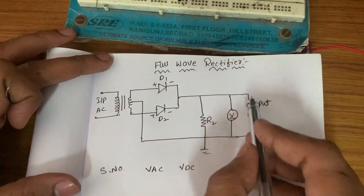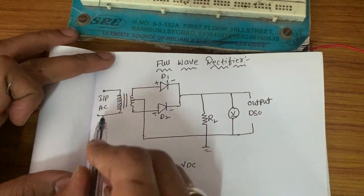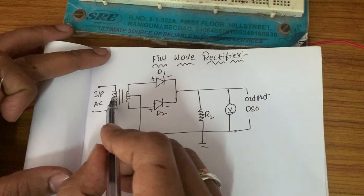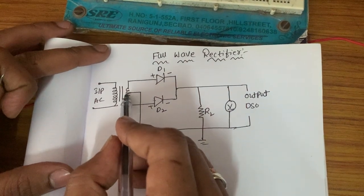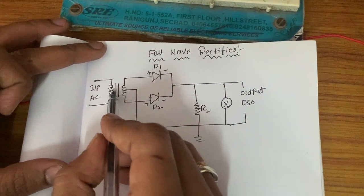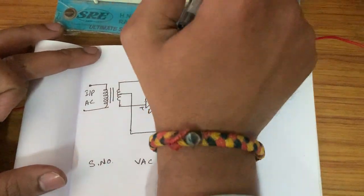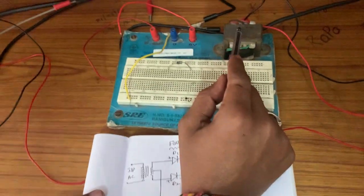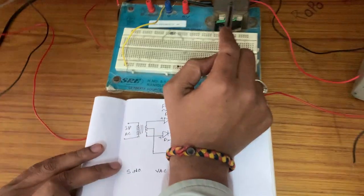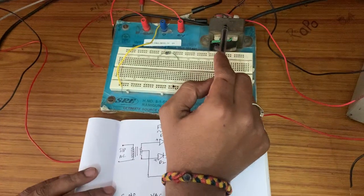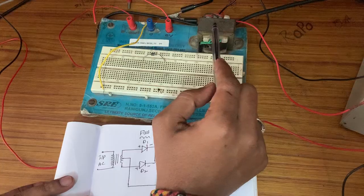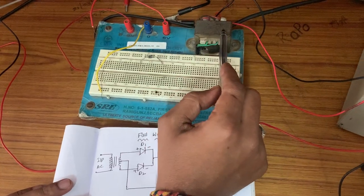This is the circuit diagram of the full wave rectifier. In this circuit diagram, if we observe, it is a step-down transformer. We are using a center-tap transformer here.